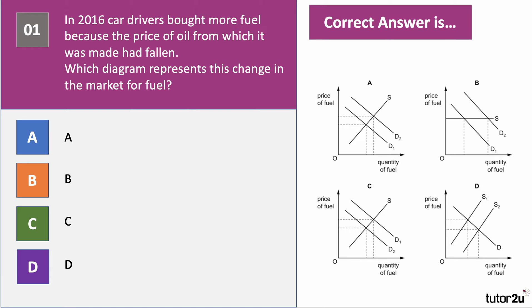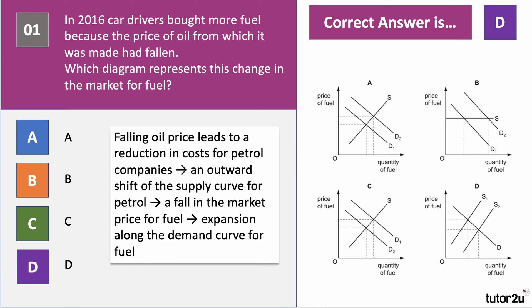The right answer is D — a shift of supply from S1 to S2. We're told there's been a fall in the price of oil that leads to a fall or reduction in costs for petrol companies like Shell and BP. Other things being equal, that causes an outward shift of the supply curve for petrol, and if the price goes down there will be an expansion along the demand curve.